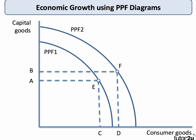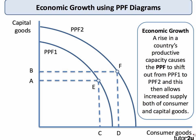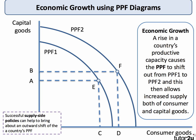Finally, let's look at how we can show long-term economic growth using the PPF. The PPF shifts out from PPF 1 to PPF 2, and we can move from combination E to combination F, where more of both capital goods and consumer goods are being produced. That is an increase in productive potential — a country's productive capacity — meaning we can supply more of both goods. To an economist, this is essentially economic growth: a sustained increase in a country's productive potential. If a country employs successful supply-side policies, that helps bring about an outward shift of the PPF.